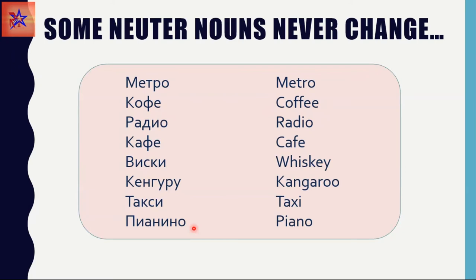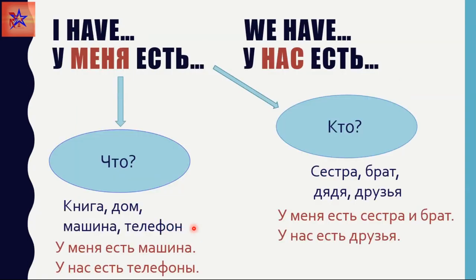As you may have noticed, all these words are borrowed from other languages. And now here is a bonus for today's lesson: a construction which you can use when you want to say that you have something. In Russian, 'I have something' would be У меня есть. This sentence can be used with inanimate objects and with different people.